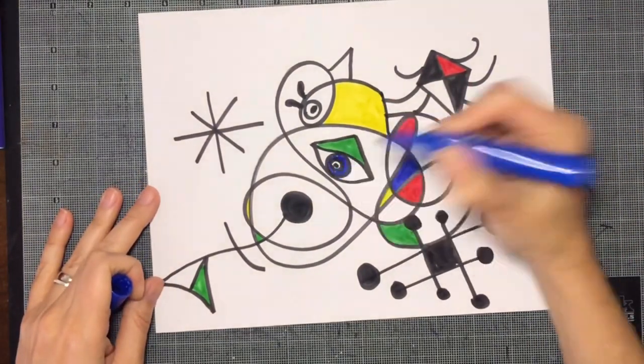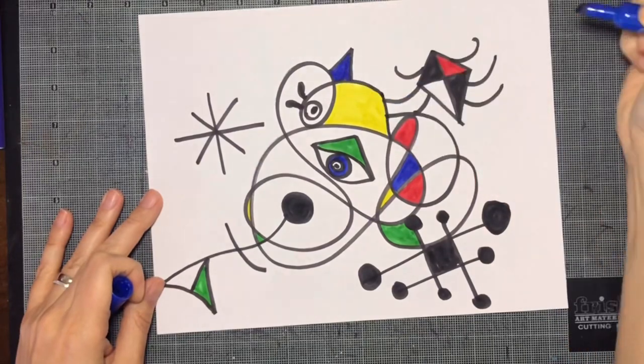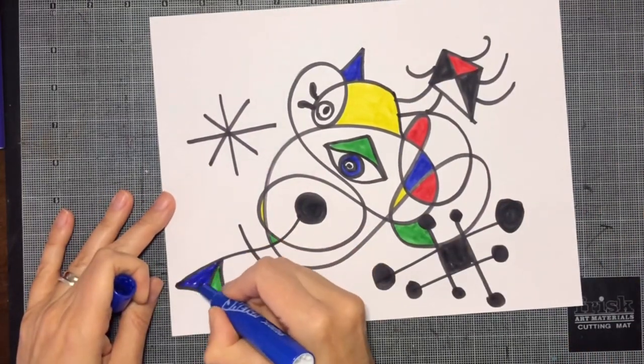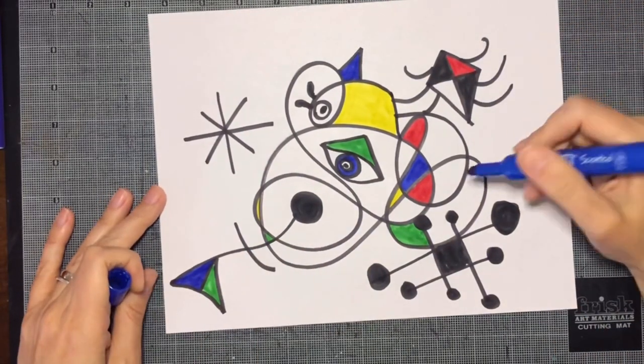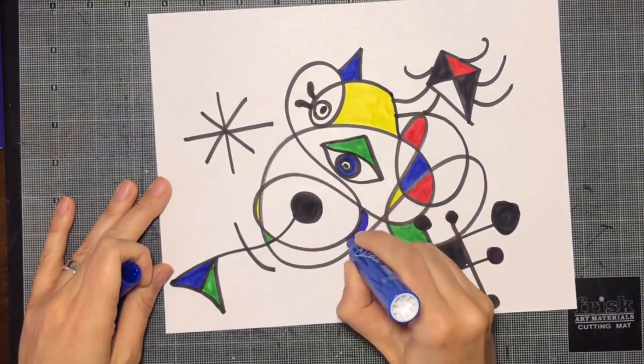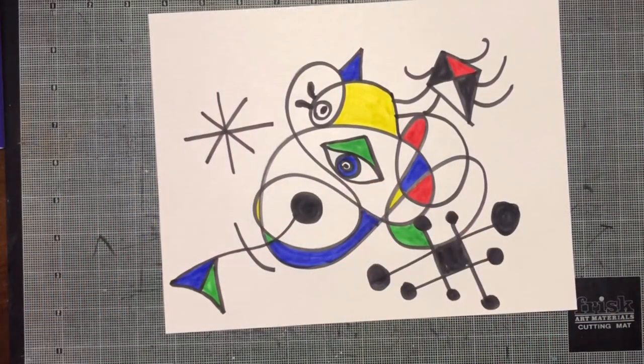You can see I'm adding blue, and my blue is close to the yellow, it's close to the red, it's close to the green, but I'm not adding blue side by side with blue.